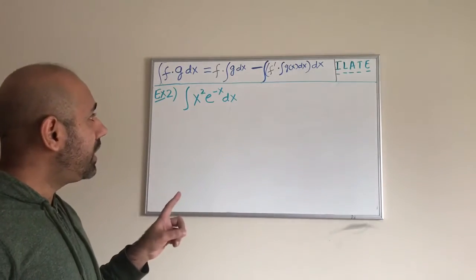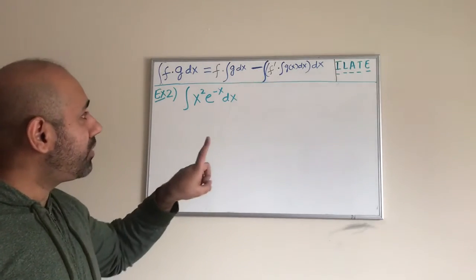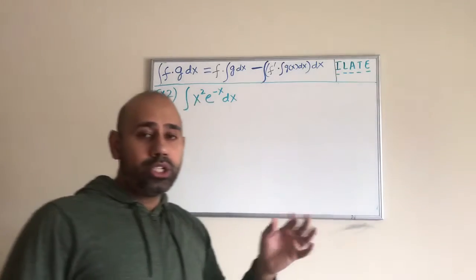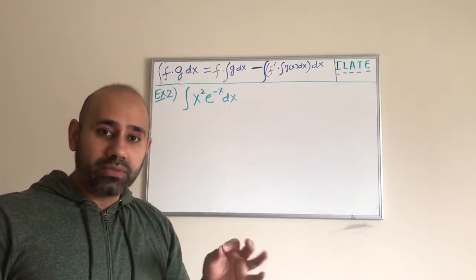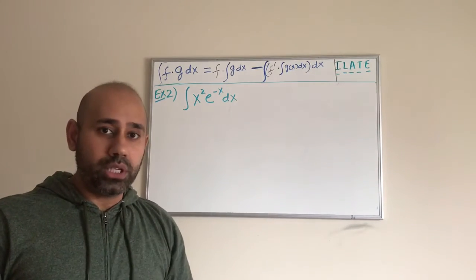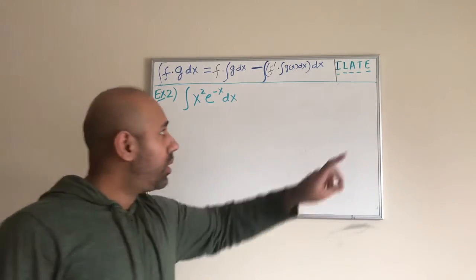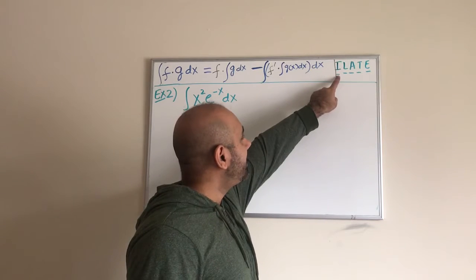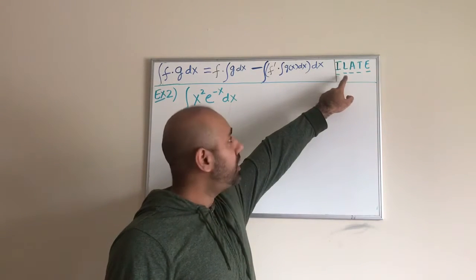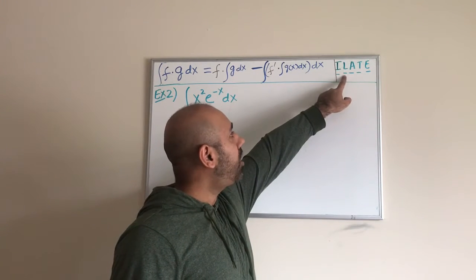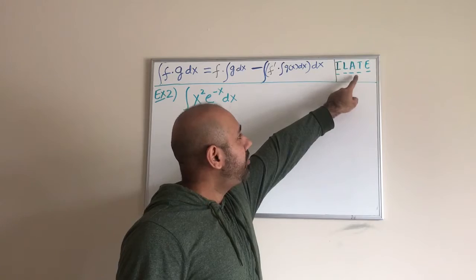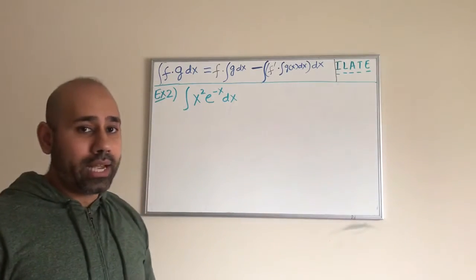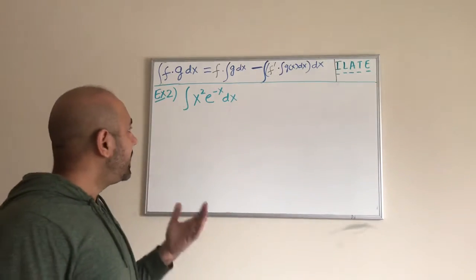We also have to keep in mind that we have to follow this order when we are trying to choose the first function f and then the other function g. So let me just quickly remind you: the I stands for inverse functions, then comes the log, algebraic, trig, and exponential functions all the way at the end.